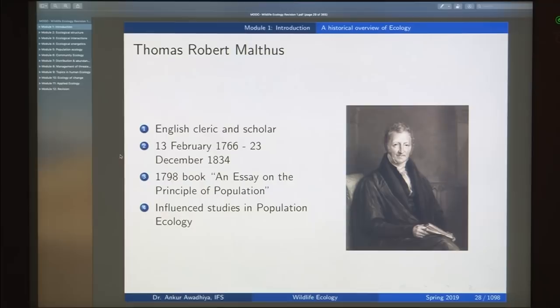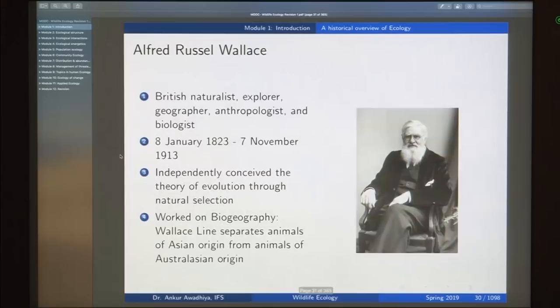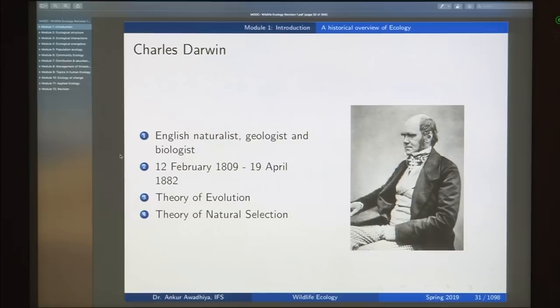We also looked at Thomas Malthus and his theories in detail when talking about human population growth. The key point is that population growth in human beings is exponential or geometric, whereas food production increases as arithmetic progression. So there is a mismatch. Then we talked about Alexander von Humboldt, considered the father of biogeography, who performed quantitative work on botanical geography especially in South America. Then Wallace and Darwin together came up with the theory of evolution.